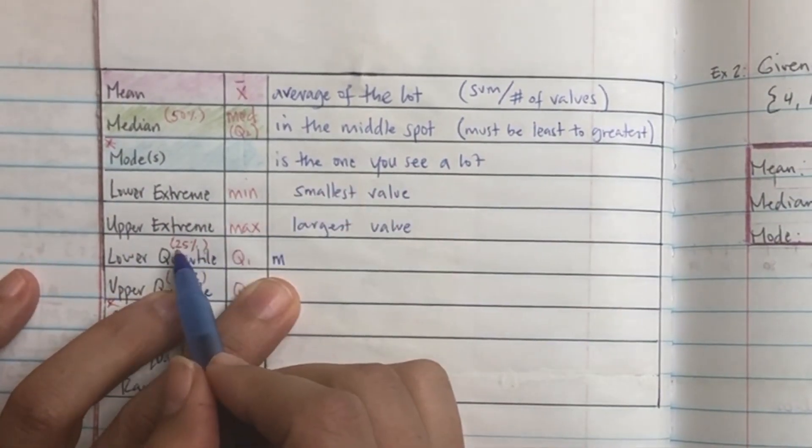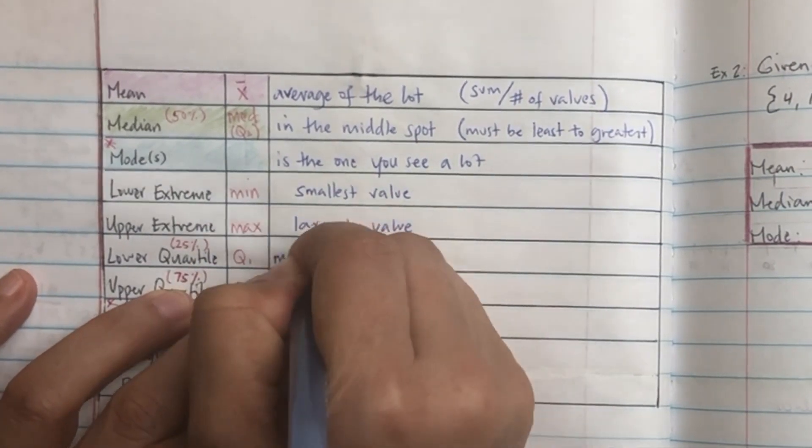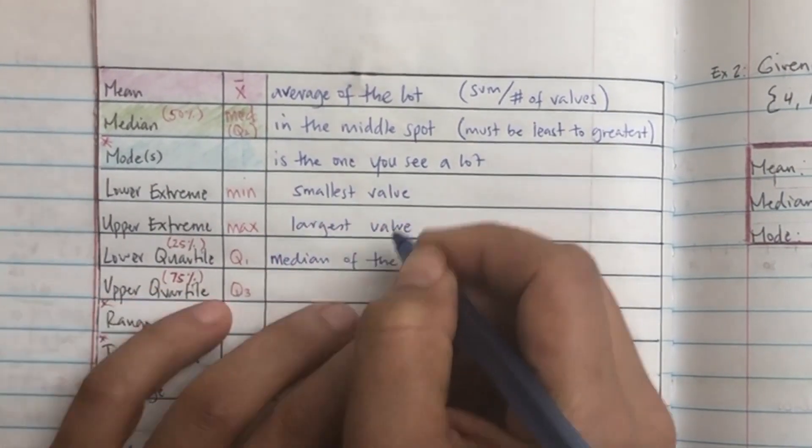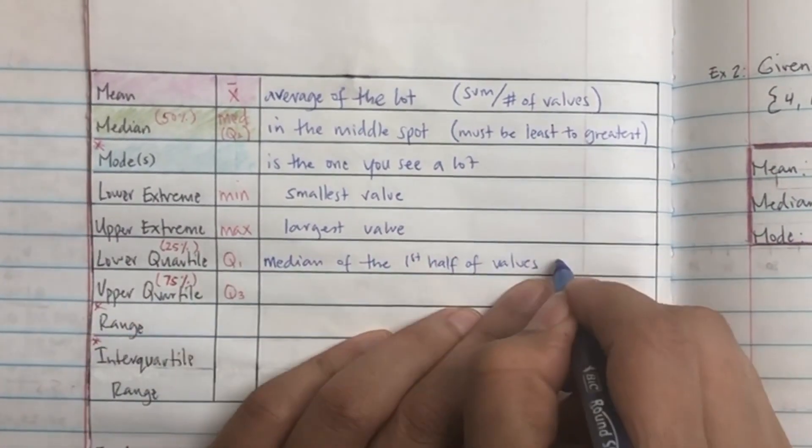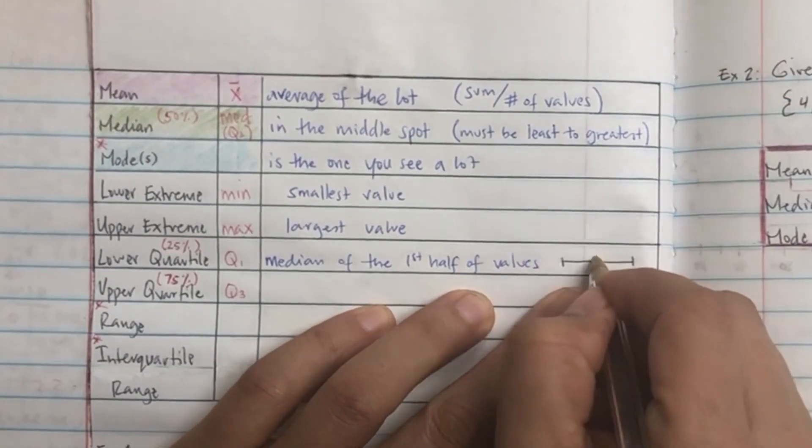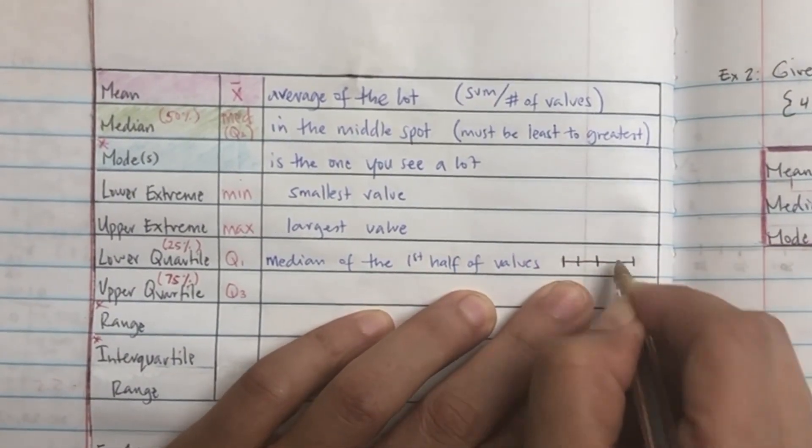Then you have the lower quartile. So lower quartile is the lowest 25%, you're going to call it Q1, and it's the median of the first half of the values. Okay, so if you're only looking at half of it, half of that, and then half of that.